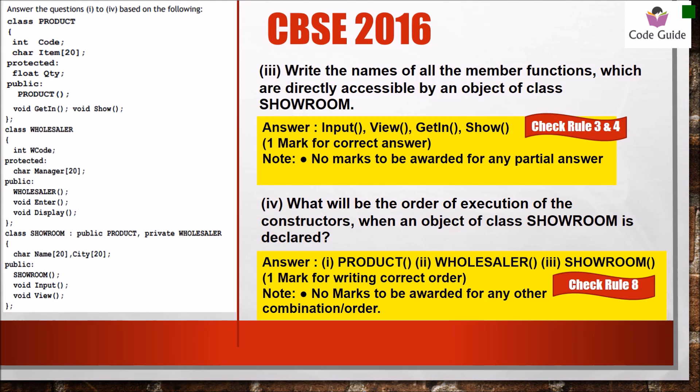For question 3, write the names of all member functions directly accessible by the object of class showroom. From the public section of product class, getIn and show are accessible. From showroom's own section, input and view are accessible. The order of constructor execution follows the base-class-first pattern: product, wholesaler, then showroom.